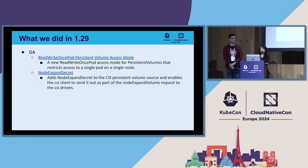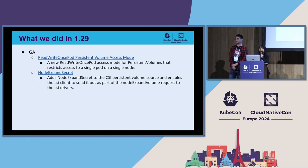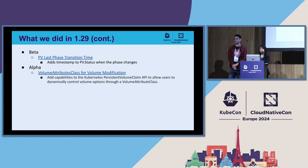The next feature moved to GA in 1.29 is node expand secret. That allows you to expand your volume on the node to expand your file system if your underlying file system requires credentials to be passed in. We also have a feature moved to beta — persistent volume last phase transition time — that adds a timestamp to the PV status when the phase of that PV changes from one to another.